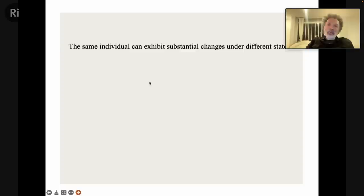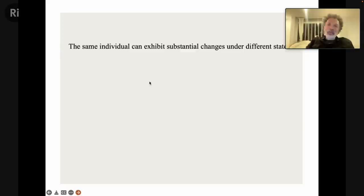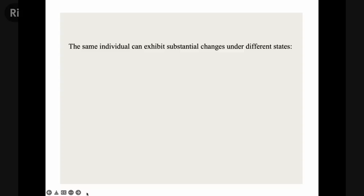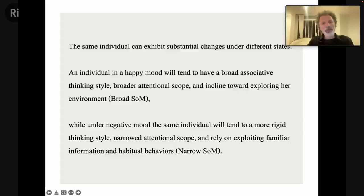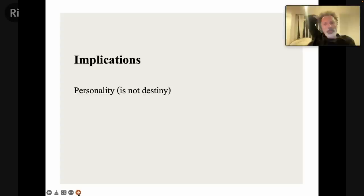We're rarely, if ever, at one extreme — we're always sliding, just a matter of proportion. As a result, the same individual can exhibit substantial changes across different states. An individual in a happy mood will tend to have a broader associative thinking style, broader attentional scope, and be inclined toward exploring her environment — the broad state of mind. Under negative mood, the same individual will tend toward a more rigid thinking style, narrowed attentional scope, and rely on exploiting familiar information and habitual behaviors — the narrow state of mind. These two descriptions seem like two different individuals, but it's all of us — we have our own slide within our own individual range.